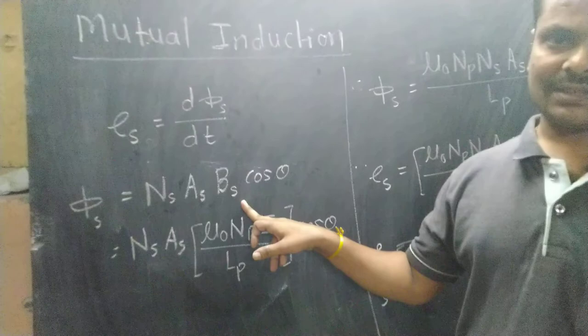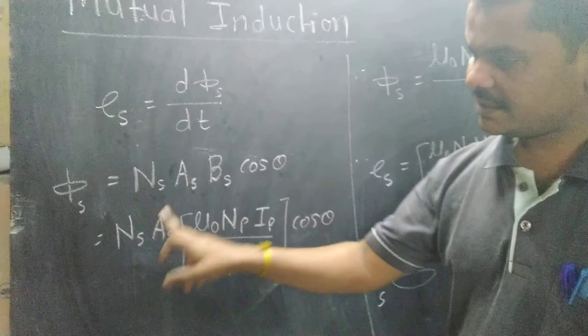Cos theta is the angle between the area vector and the magnetic field direction. This is called the angle. Here, Bs means the magnetic field inside the secondary coil.